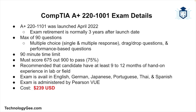This exam has a 90-minute time limit, and in order to pass the 220-1101 exam, you will need to score 675 points out of a possible 900 points, or 75%. CompTIA recommends at least 9 to 12 months of hands-on experience, but based on my 20 years in tech and the countless people I've trained, plenty of people have successfully passed this exam without any hands-on experience whatsoever.